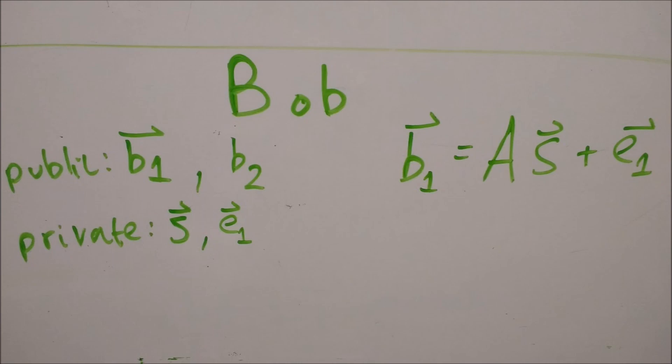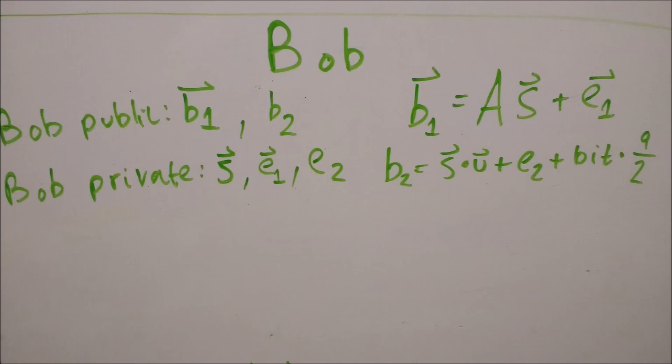So Bob now has the tools to send an encrypted message to Alice. Bob computes two vectors, b1 and b2, and will send them both to Alice. First, Bob chooses a secret random vector s with m entries. Now b1 is defined as s times A plus e1, where e1 is yet another random vector with m integers, except that now the magnitude of the entries in e1 must be quite small.